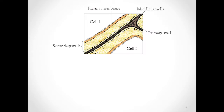Now, before I move on, I want to take a look at the layers of the plant cell walls, just to remind everybody what plant anatomy is important here. Plant cells are joined together tightly by the middle lamella, and you can see it here in the dark coloration, kind of brownish-blackish. This is a lignin-rich matrix that holds the cells together.